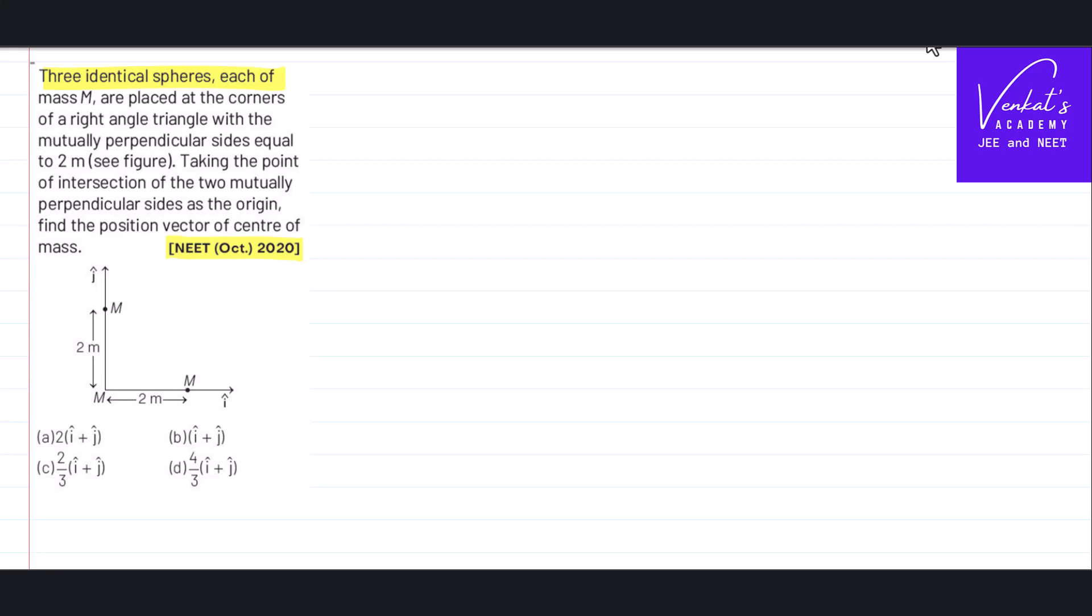Three identical spheres, each of mass m, are placed at the corners of a right angle triangle with mutually perpendicular sides as shown. Taking the point of intersection as the origin, find the position vector of center of mass.